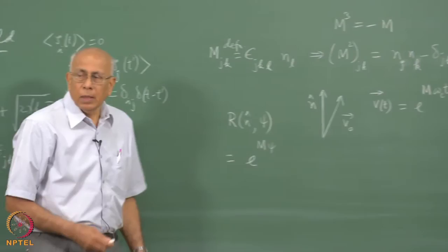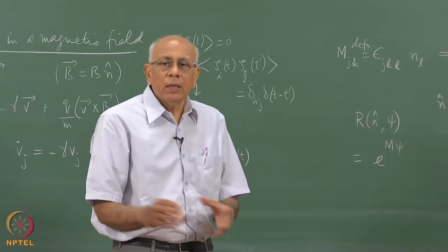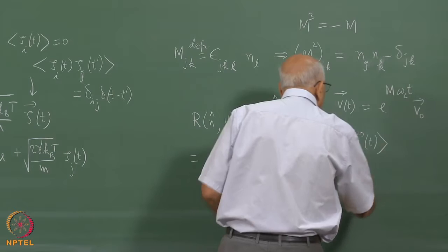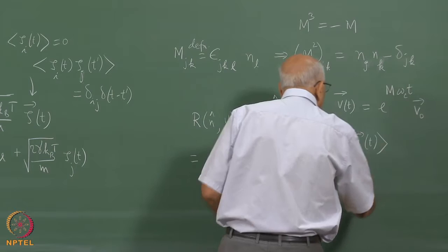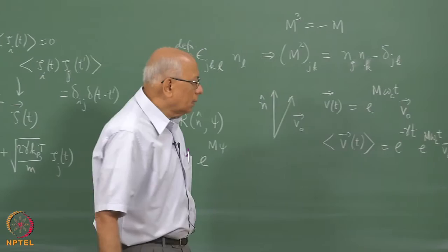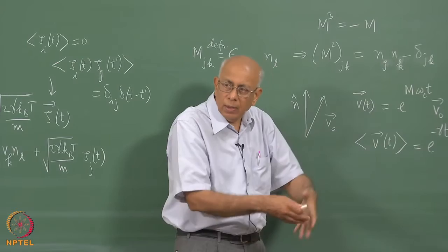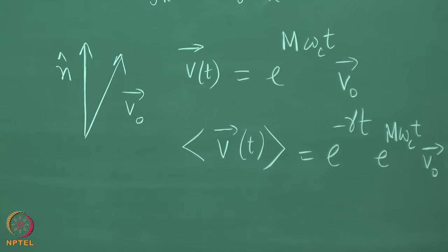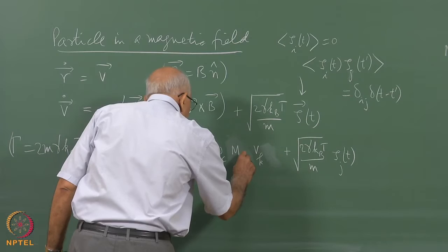For the Brownian particle, all that happens is that the average v(t) becomes e^(-gamma·t) · e^(M·omega_c·t) · v_0, where we write this as a 3×3 matrix acting on the initial velocity column vector. So rather than solving the problem explicitly, let us write the Fokker-Planck equation.